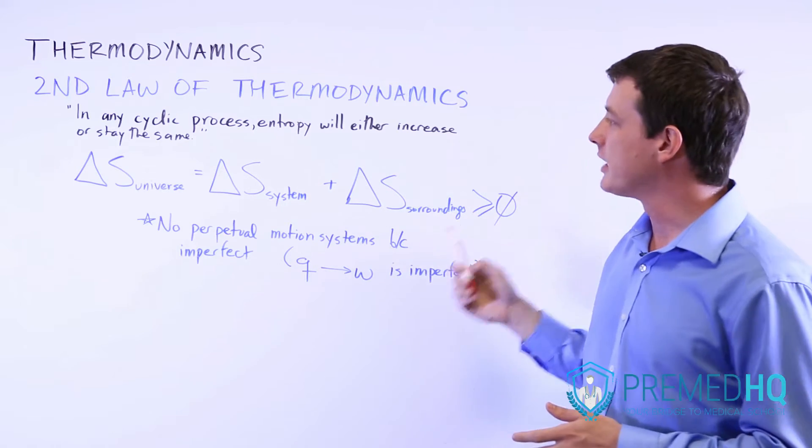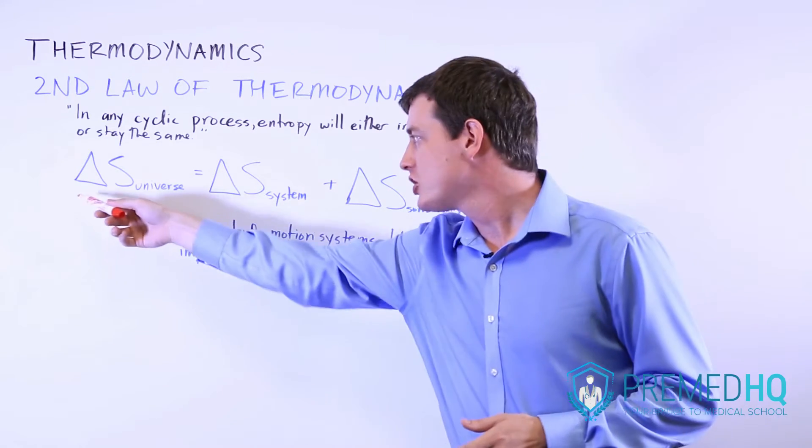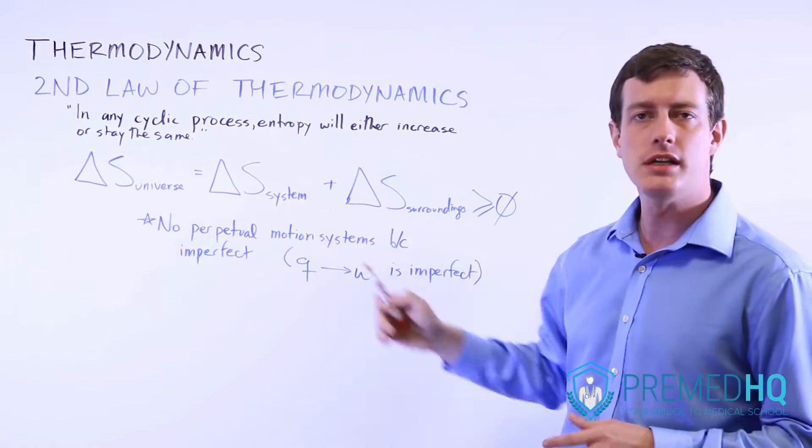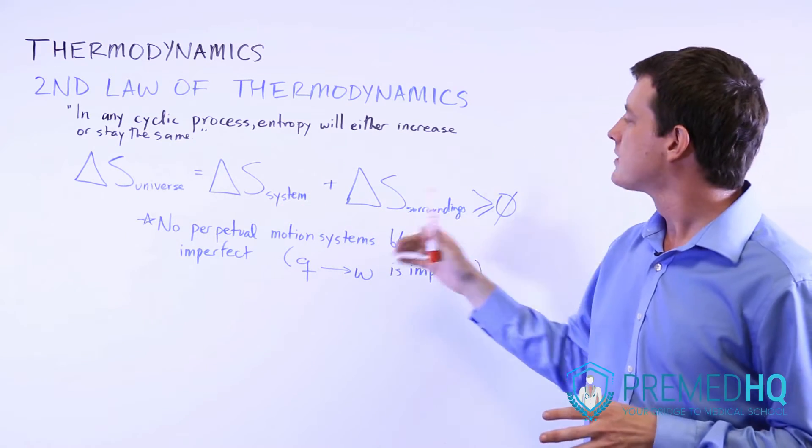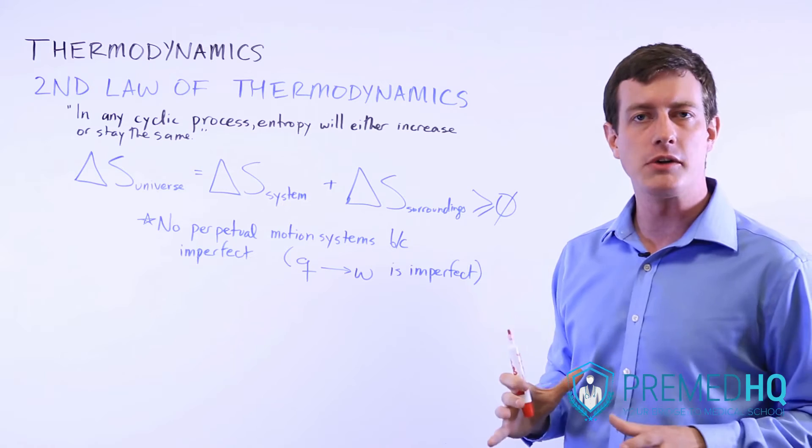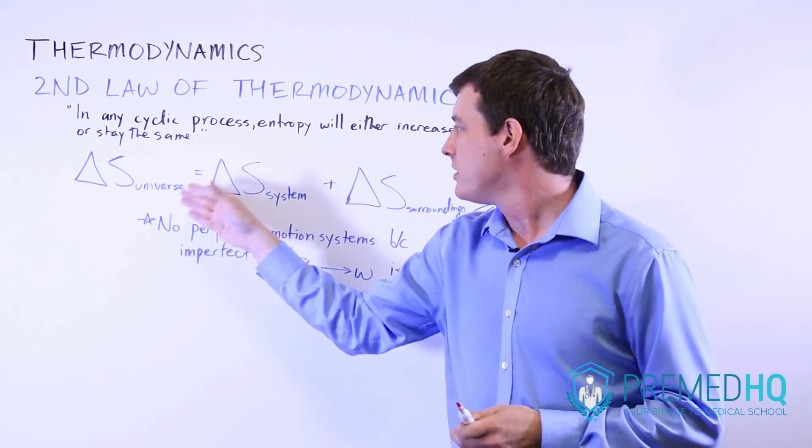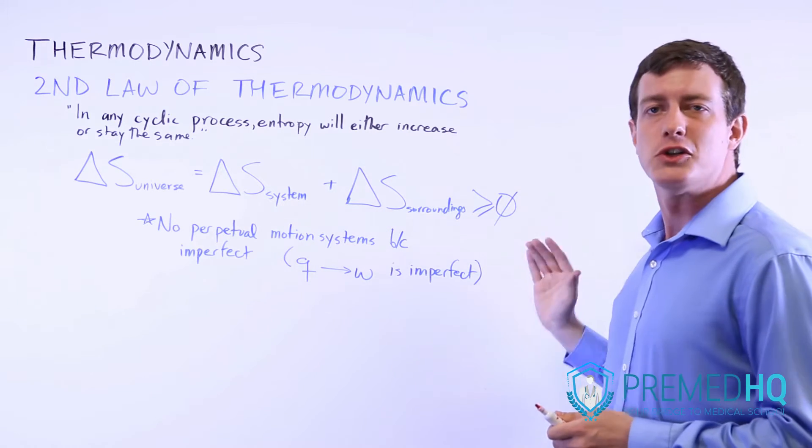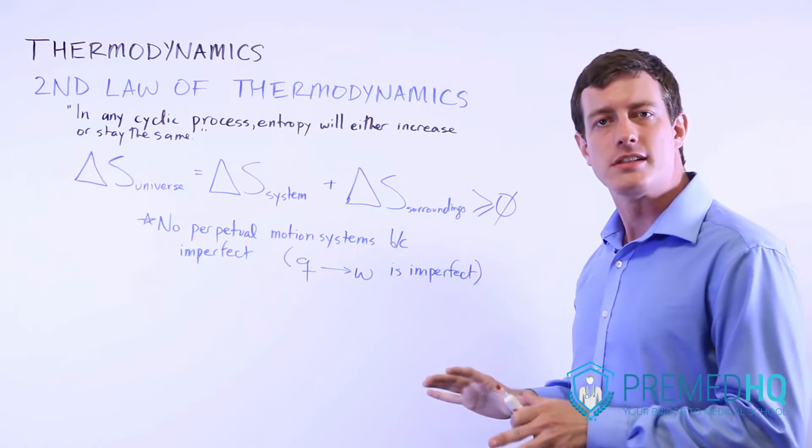The mathematical relationship says that the change in the entropy of the universe is equal to the change in entropy of the system plus the change in entropy of the surroundings. That number, the change in entropy of the universe, will always be equal to or greater than zero. You never see a decrease in entropy.